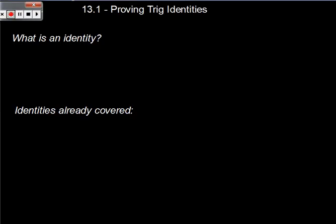Today we're going to start talking about section 13.1 from your textbook, which is proving trig identities. We're going to talk about manipulating identities and starting to simplify using things that we already know. First of all, we have to talk about what is an identity. An identity is an equation that is true for all values of the variable.